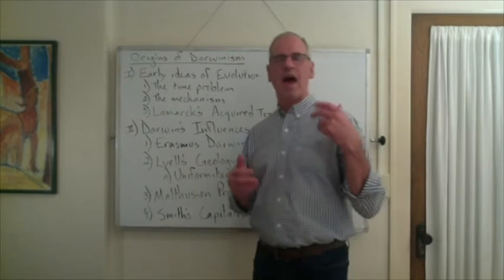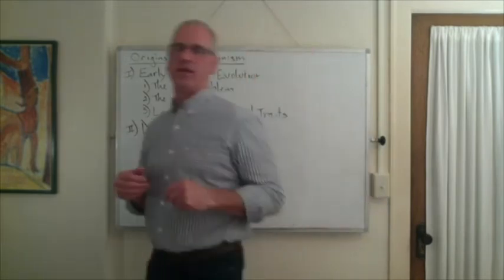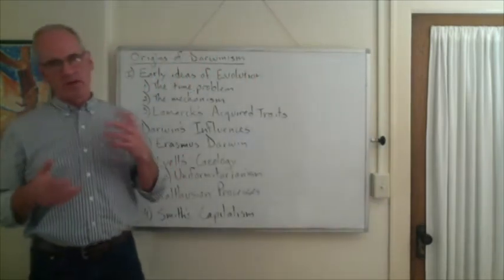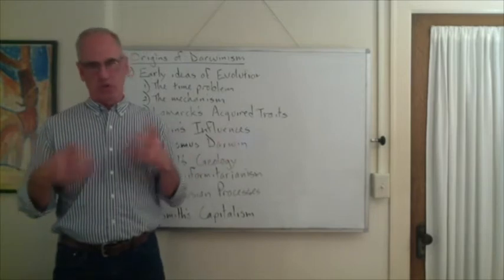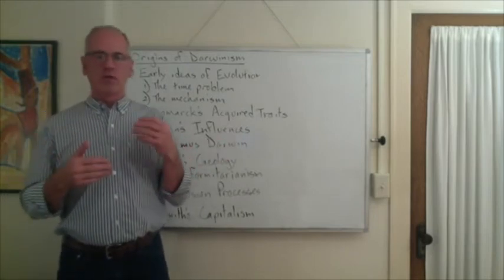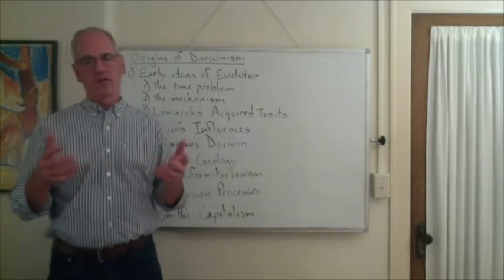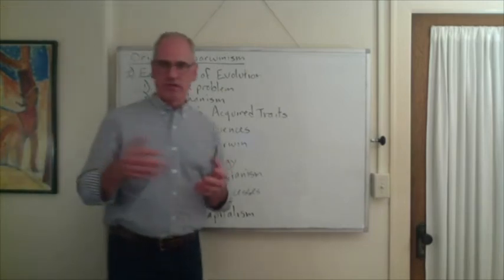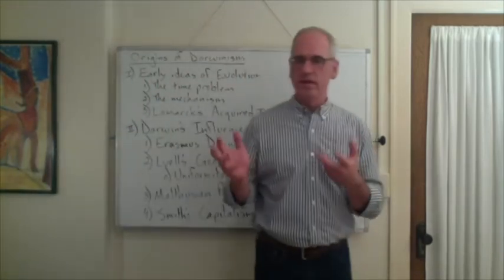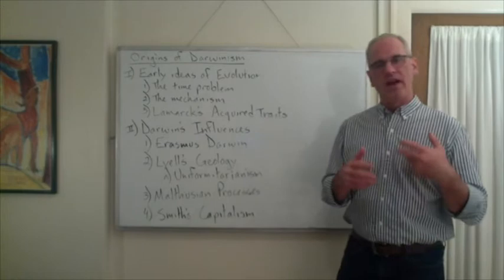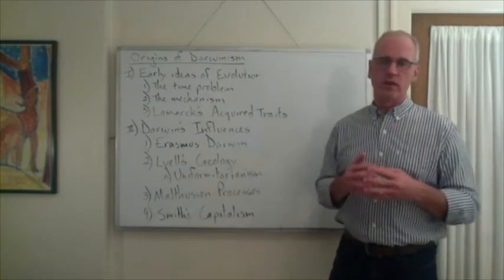I want to talk about how Charles Darwin developed his ideas, because Darwin didn't just pull his ideas out of nowhere. Darwin was a product of cultural influences and a stew of ideas from the Enlightenment that helped him produce his theory of evolution.